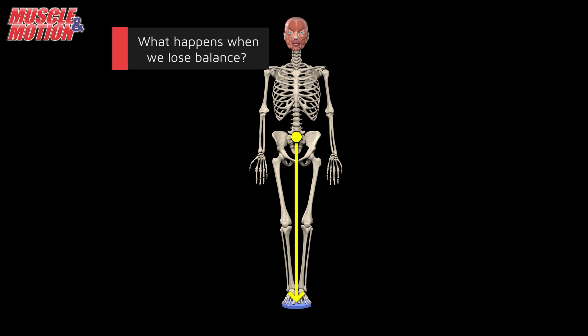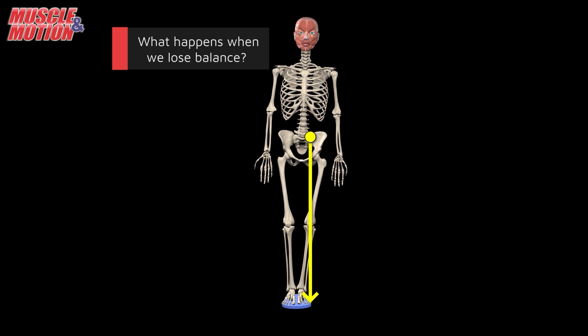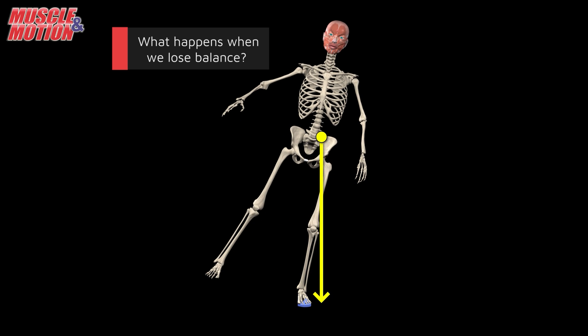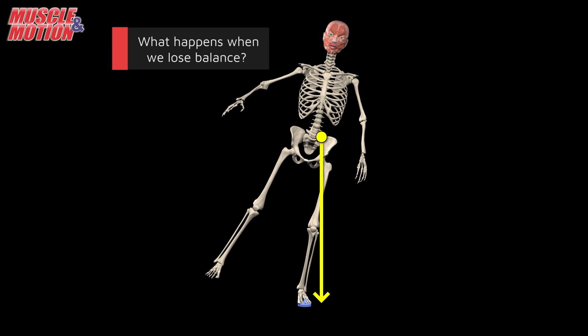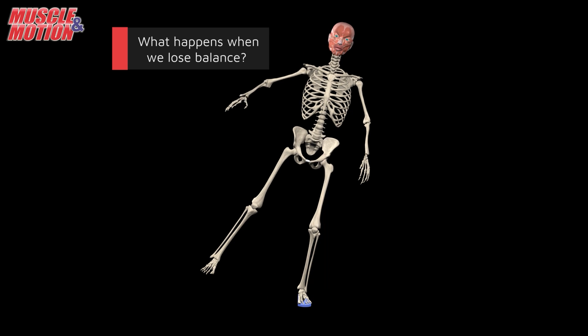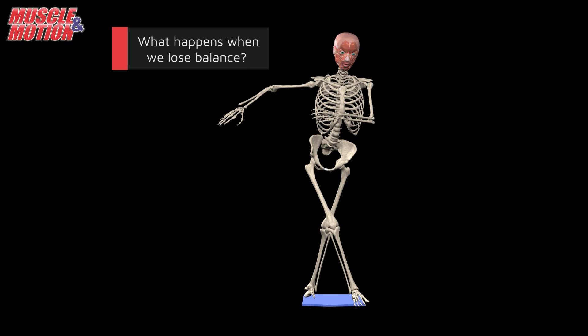What happens when we lose balance? Losing balance occurs when the body's center of gravity moves outside the base of support, which significantly affects the ability to maintain balance. When this happens, two options arise: either falling to the ground or taking a step forward to increase the base of support.